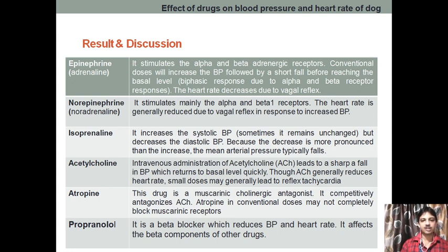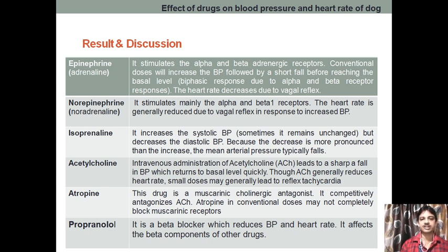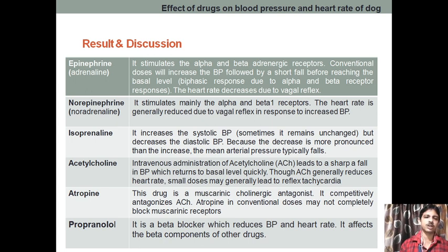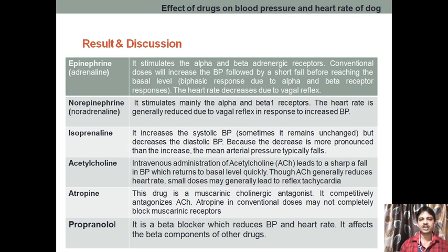Coming to atropine — it is an anticholinergic drug that acts as a muscarinic cholinergic antagonist. It will completely antagonize the effect of acetylcholine. At a conventional dose it may not produce much effect because it may not block the muscarinic receptor sufficiently, but if we increase the dose it will block the muscarinic receptor and you can observe tachycardia as well — that is also possible with atropine.